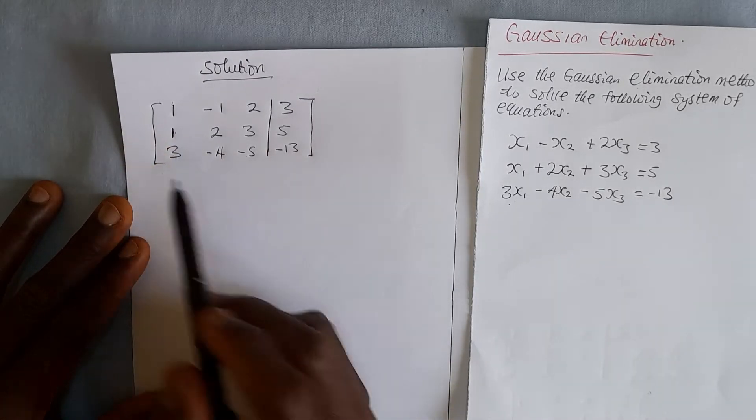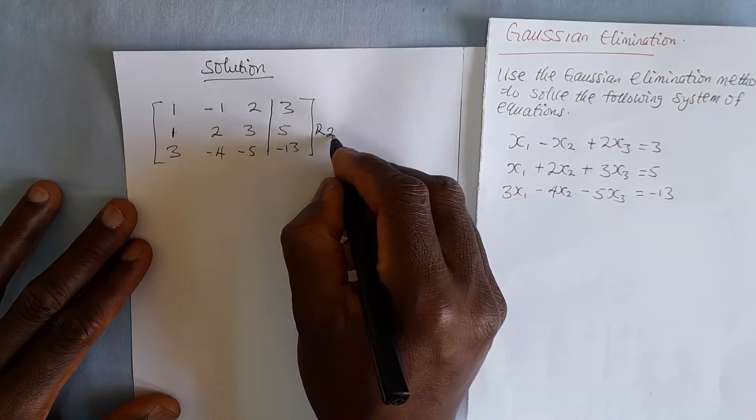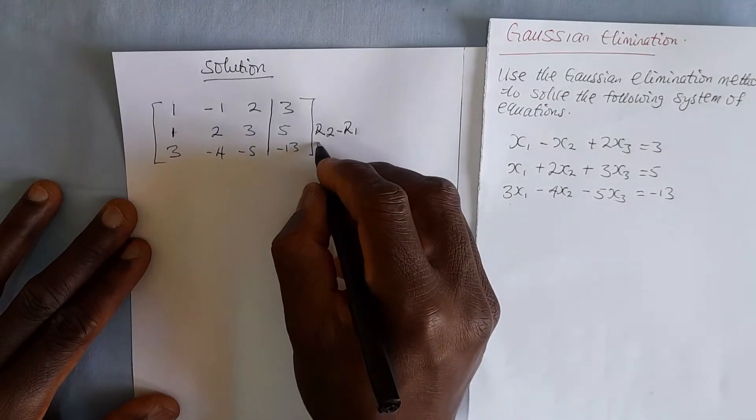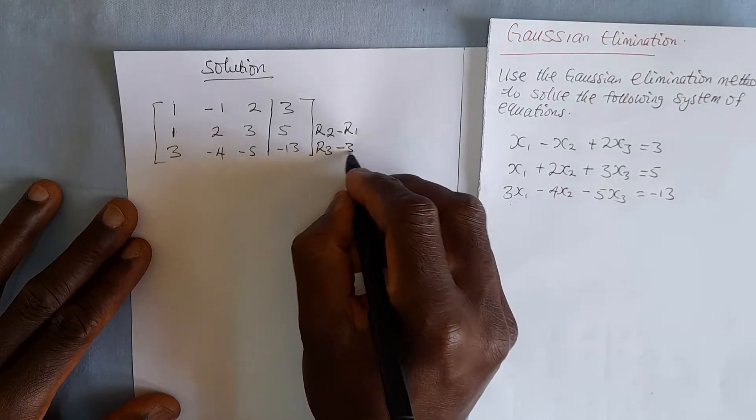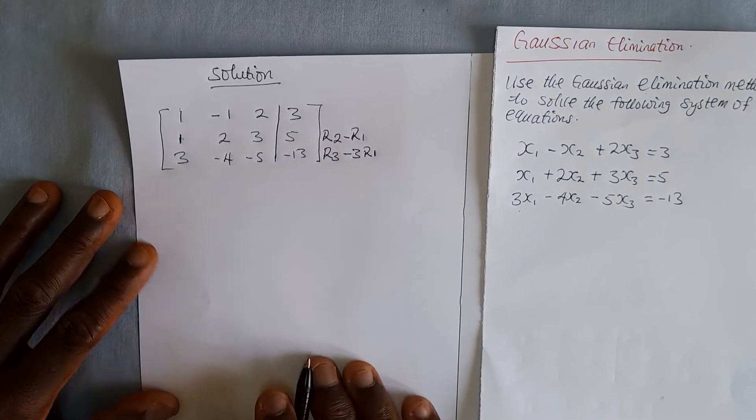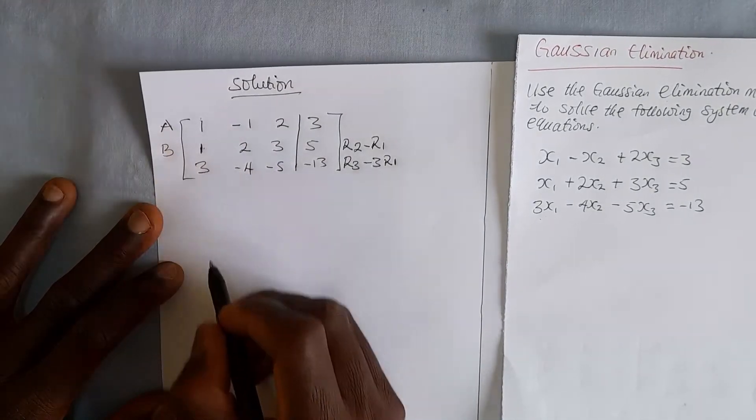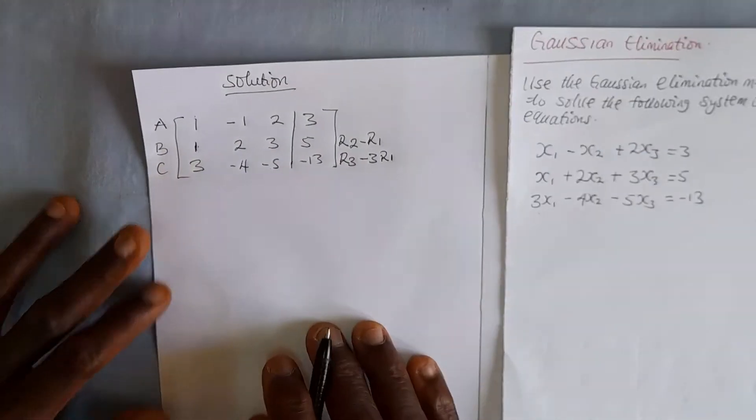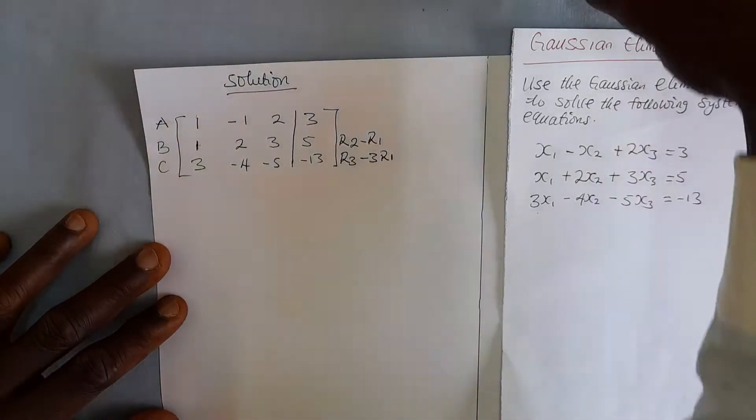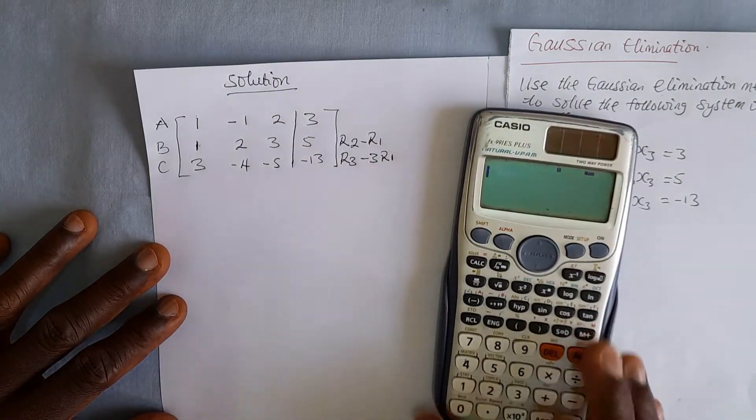For us to make this a zero, we have to do what is called the row operation. We take row 2 minus row 1, and for row 3, we minus it from 3 row 1. But because we are going to use a calculator, let us name our row 1 as A, our row 2 as B, and our row 3 as C. Because our calculator may not have R2, R1, and the rest of them. So we proceed with that as we define it in the calculator.